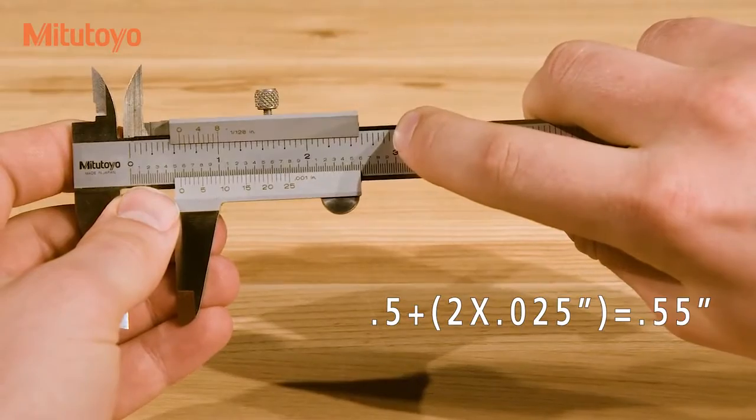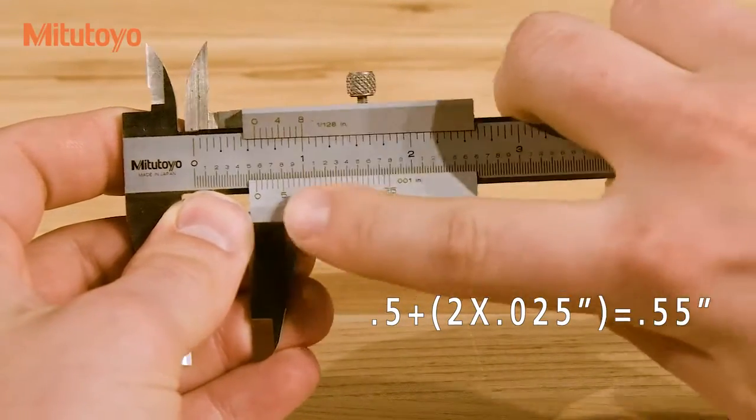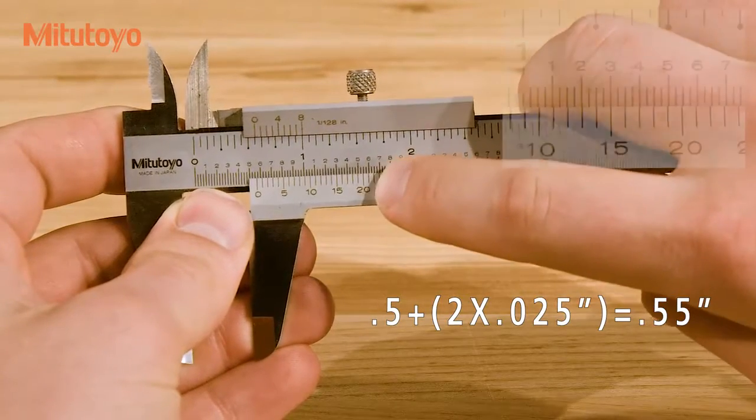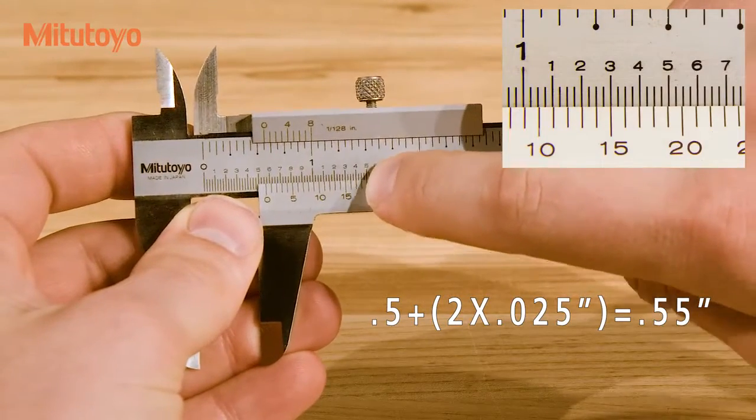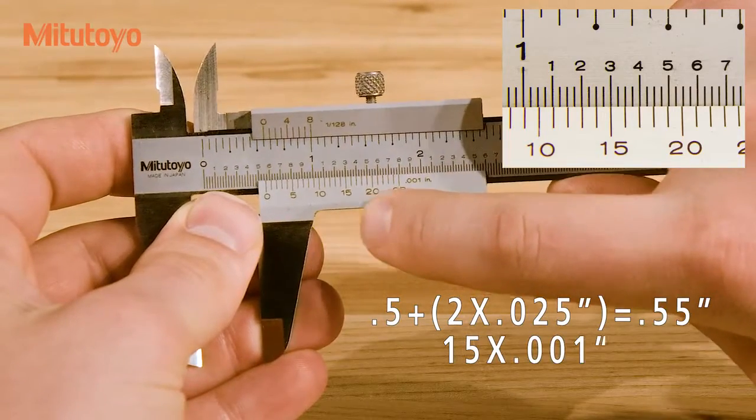To read the vernier scale, note how the lines on the scale match up with the lines on the main scale. The way that the scale is made, only one of these lines will match up correctly. In this case, the 15 matches up correctly, so that's .015 inches.